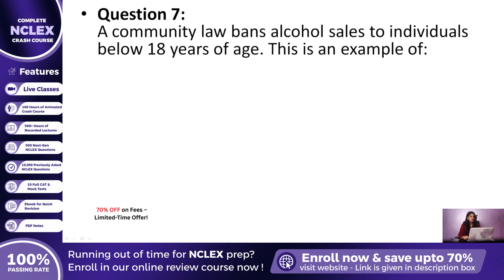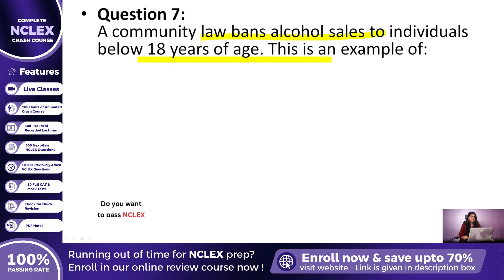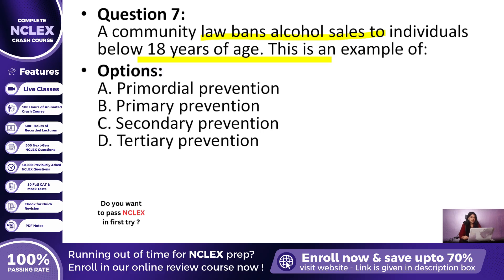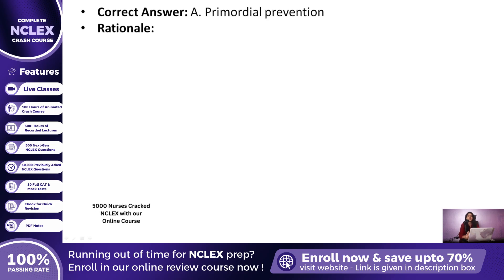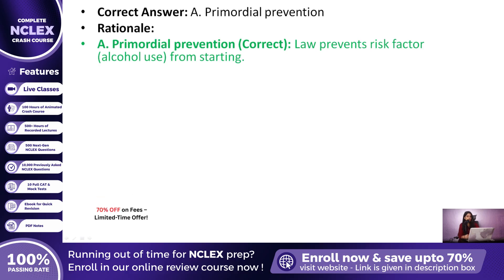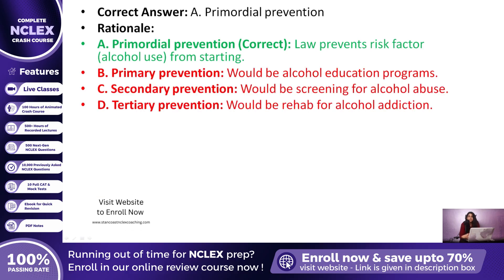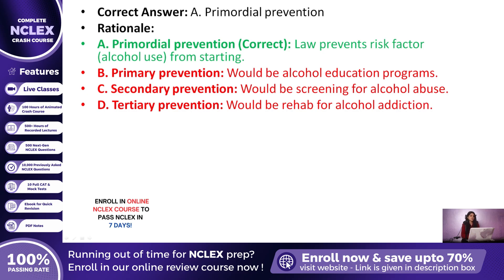Question 7: A community law bans alcohol sales to individuals under 18 years of age. Which level of prevention is this? The correct answer is A — Primordial prevention. This is policy-level action to prevent risk factors from ever developing. Education programs would be primary, screening for alcoholism would be secondary, and rehabilitation for alcohol dependence would be tertiary.